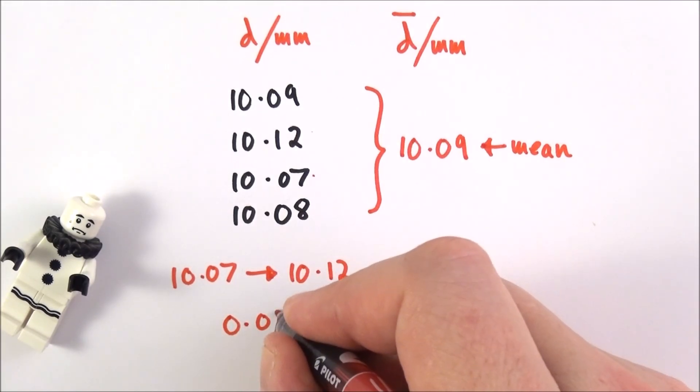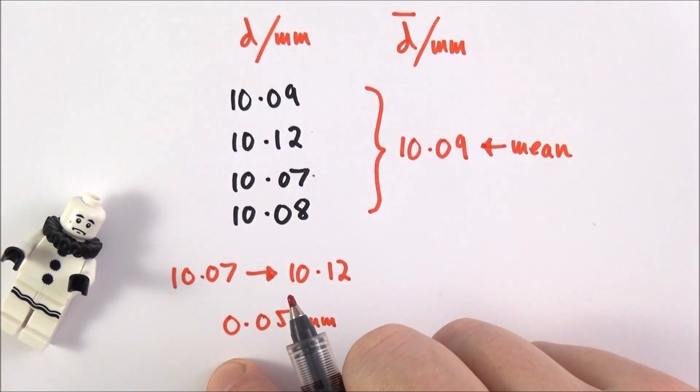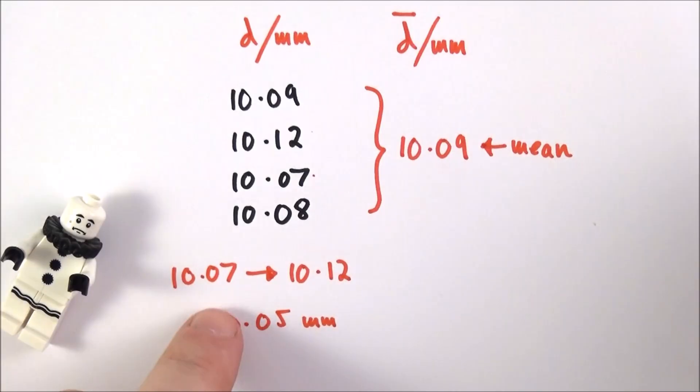So the range of my values is equal to 0.05 of a millimeter. Now it's the size of this range which tells us about the uncertainty in the result.